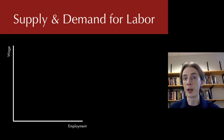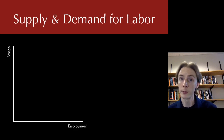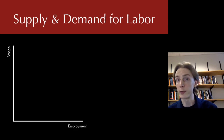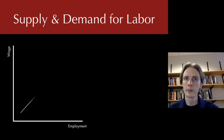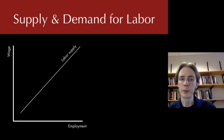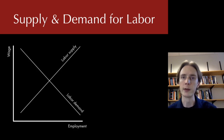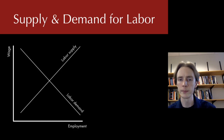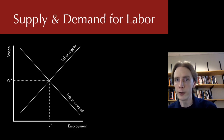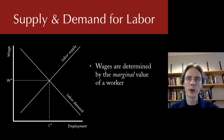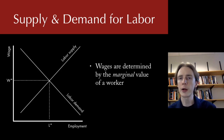The supply and demand for labor works the same as for anything else. On the horizontal axis we have employment — our quantity of labor — and on the vertical axis we have the wage, the price of labor. Labor supply slopes upward because the more you get paid, the more you're willing to work. Demand for labor slopes down because higher wages mean fewer people employers find it worthwhile to hire.